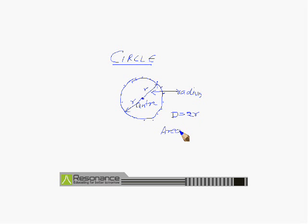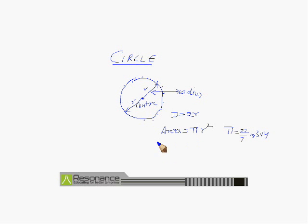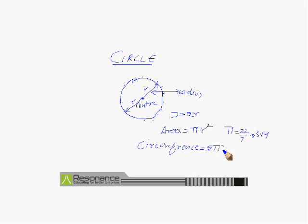The area of the circle is defined as pi r squared, where the value of pi is 22 upon 7 or 3.14. The perimeter of the circle is called the circumference, and it is equal to 2 pi r, or you can say pi into diameter.